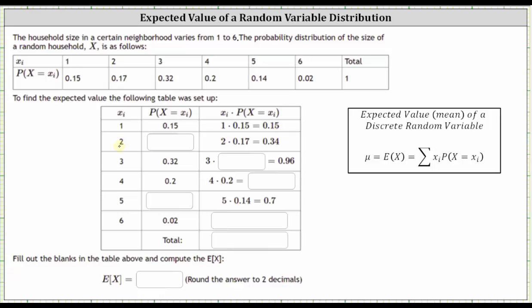So for X equals two, the probability X equals two is 0.17 from the table. In the third column we have two times 0.17 which equals 0.34. For X equals three, we already have the probability of 0.32, and therefore in the third column we need three times 0.32, which we are already given is equal to 0.96.